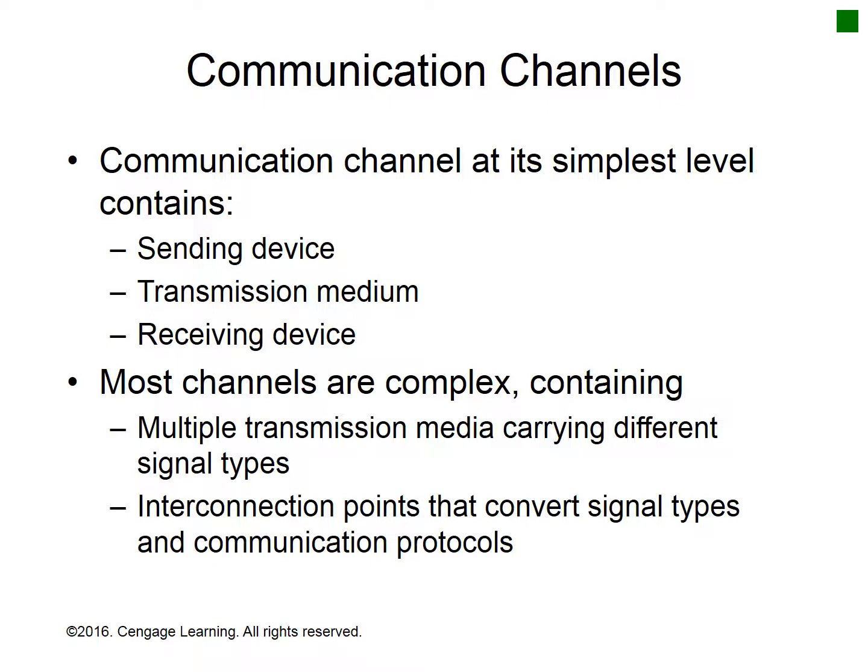Channel organization describes the number of lines dedicated to a channel and the assignment of specific signals to these channels. A simplex channel uses one optical fiber or copper wire pair to transmit data in one direction only. A half-duplex channel is identical to a simplex channel, but can send a line turnaround message to reverse transmission direction. Full duplex channels use two fibers or wire pairs to support simultaneous transmission in both directions.